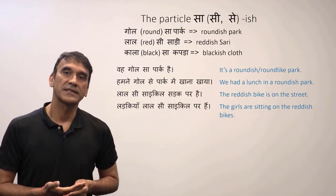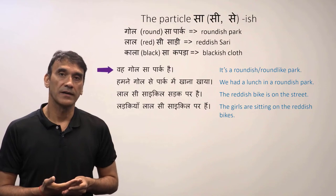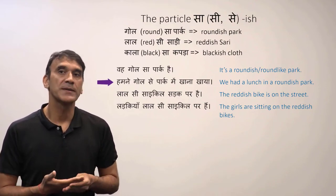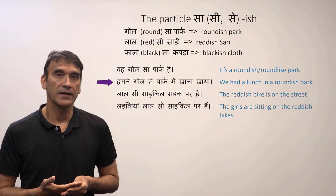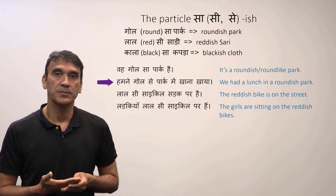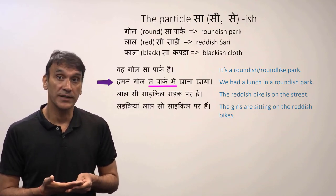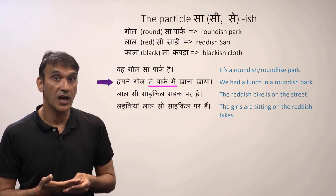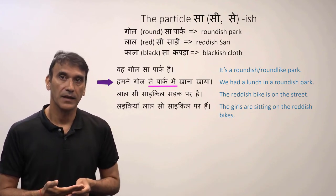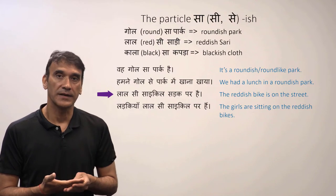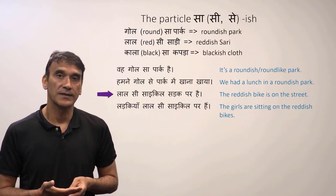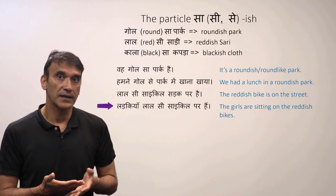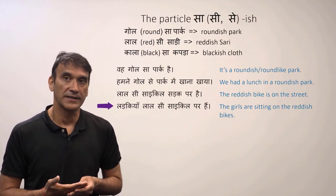Let's take some sentences. 'Wo gol sa park hai' — it's a roundish park. 'Humne gol se park mein khana khaya' — we had lunch in a roundish park. Since there's a postposition here, the particle 'sa' becomes 'se' before the postposition. 'Laal si saikil sadak par hai' — the reddish bike is on the street. 'Ladkiyan laal si saikil par hain' — the girls are sitting on the reddish bikes.